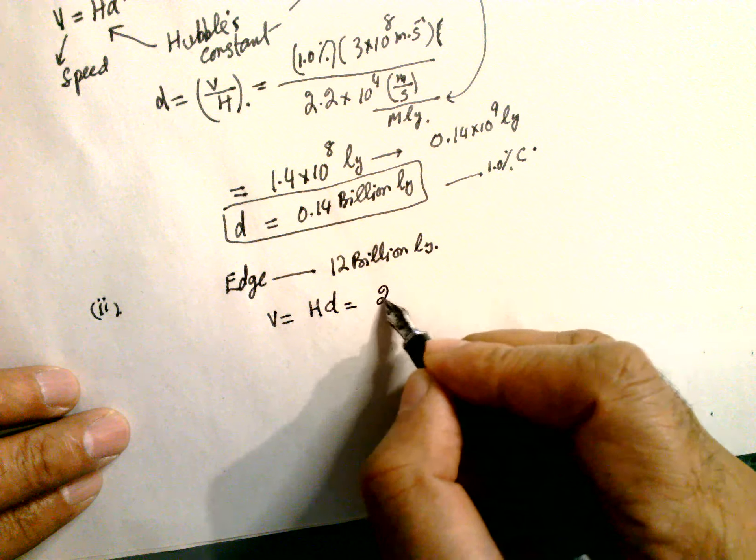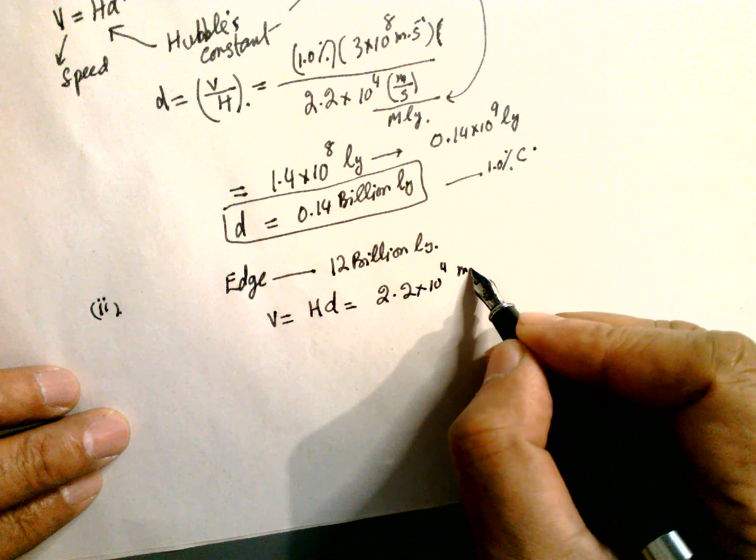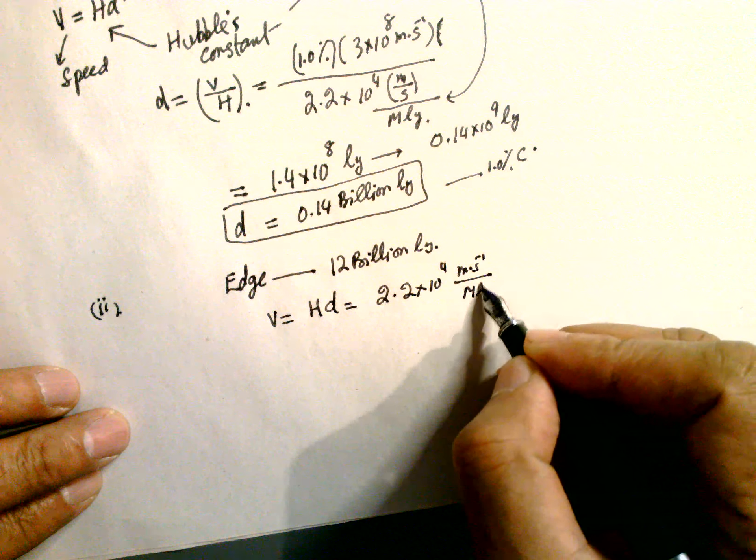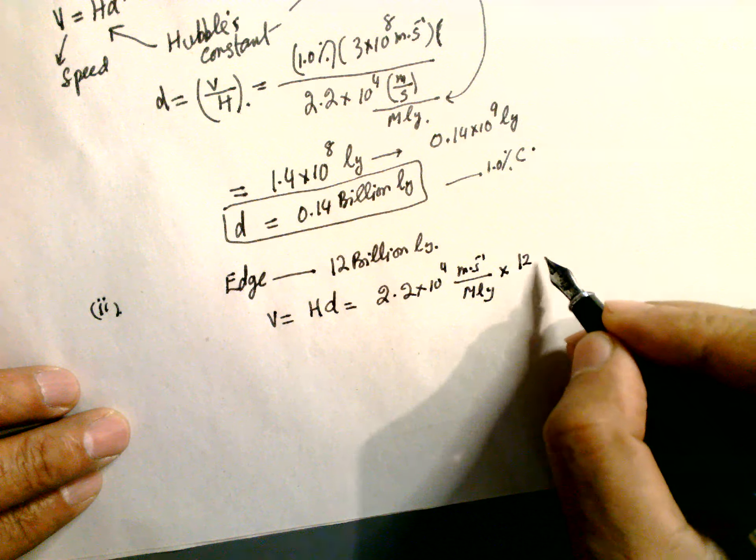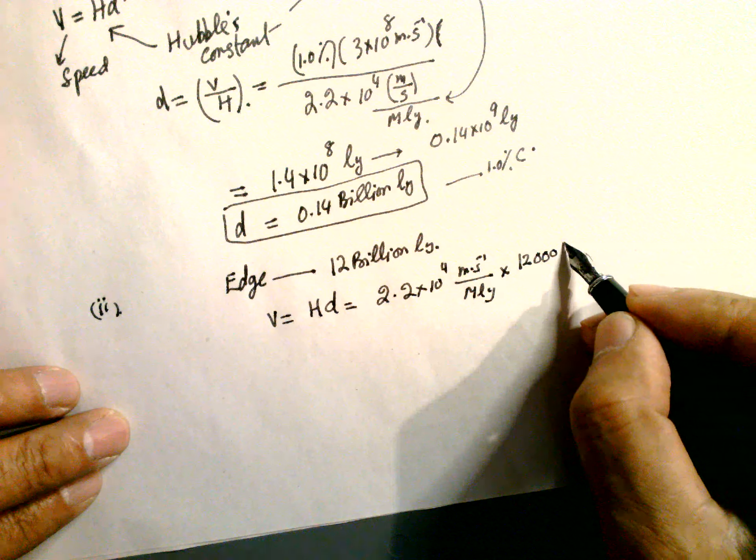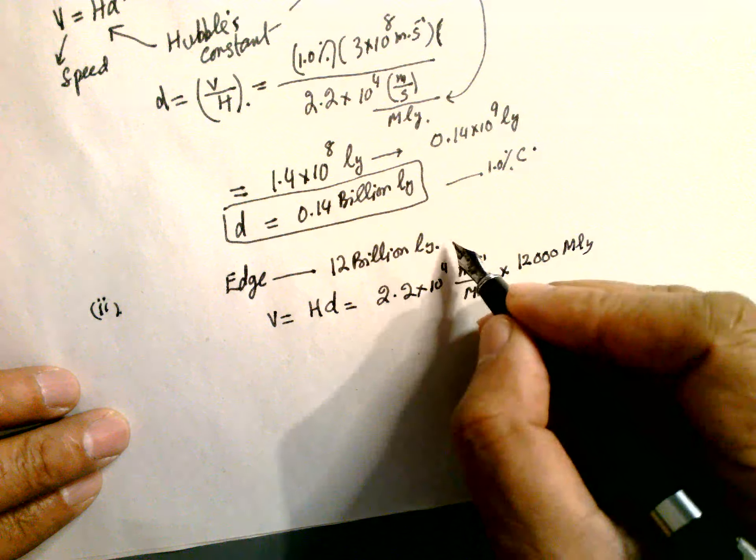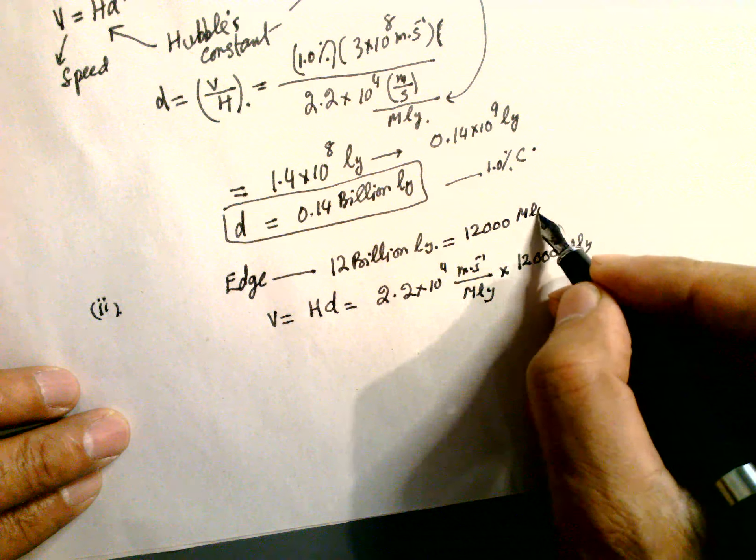H equals 2.2×10^4 meters per second per million light years, multiplied by 12 billion, or 12,000 million light years.